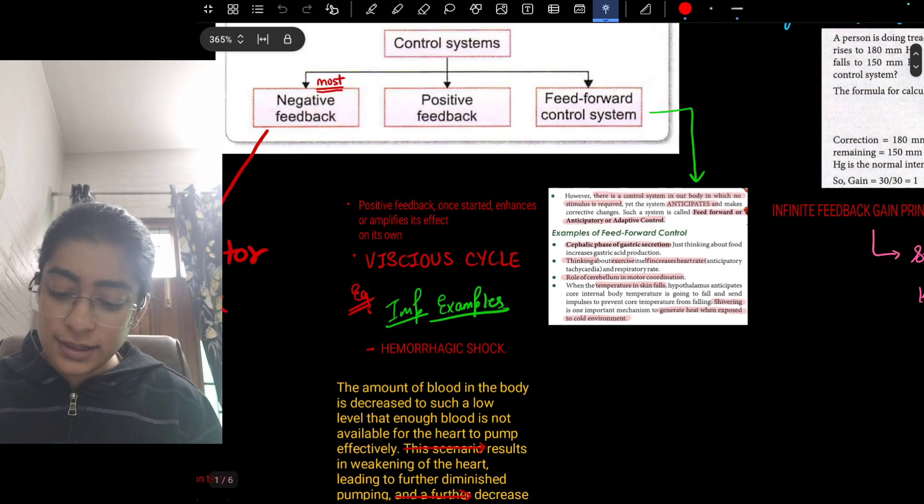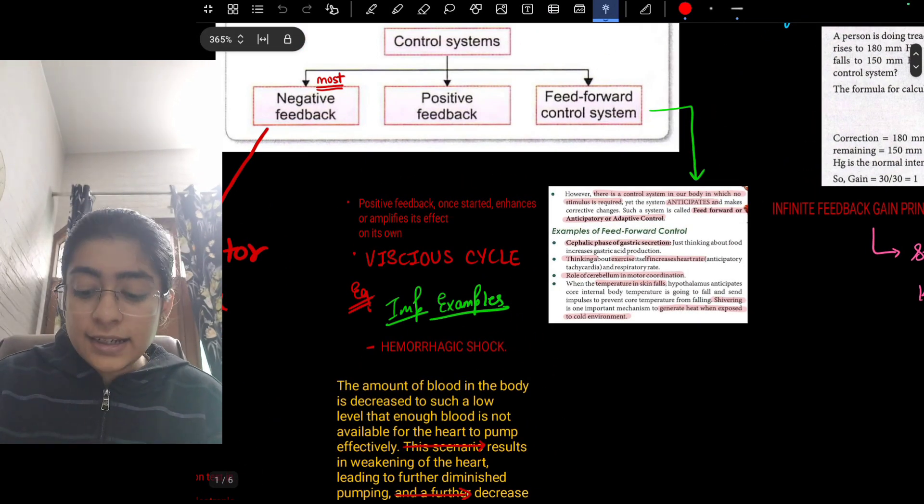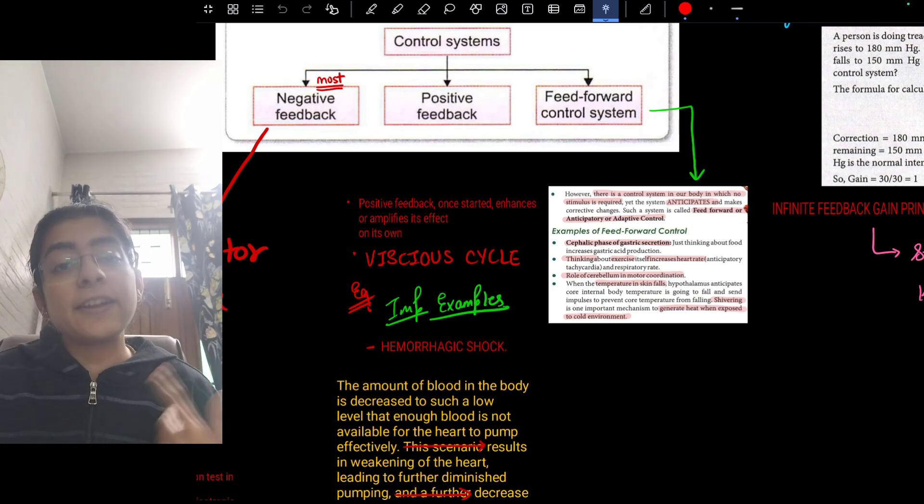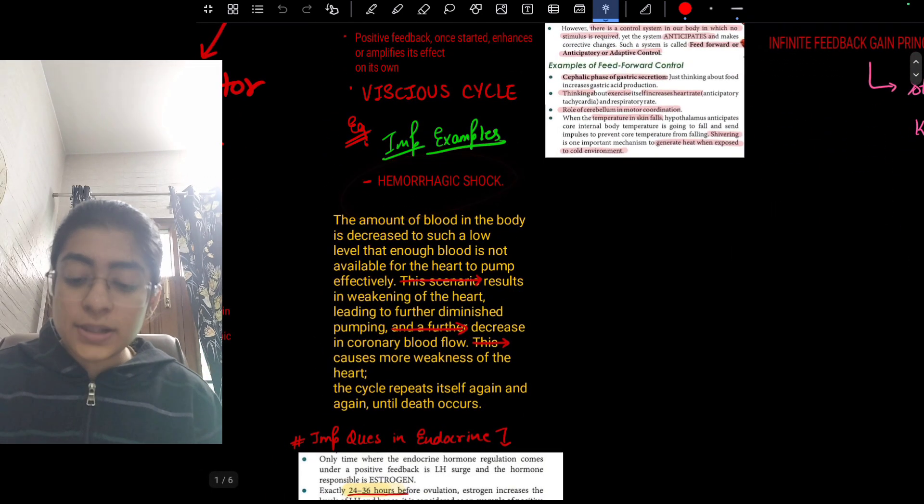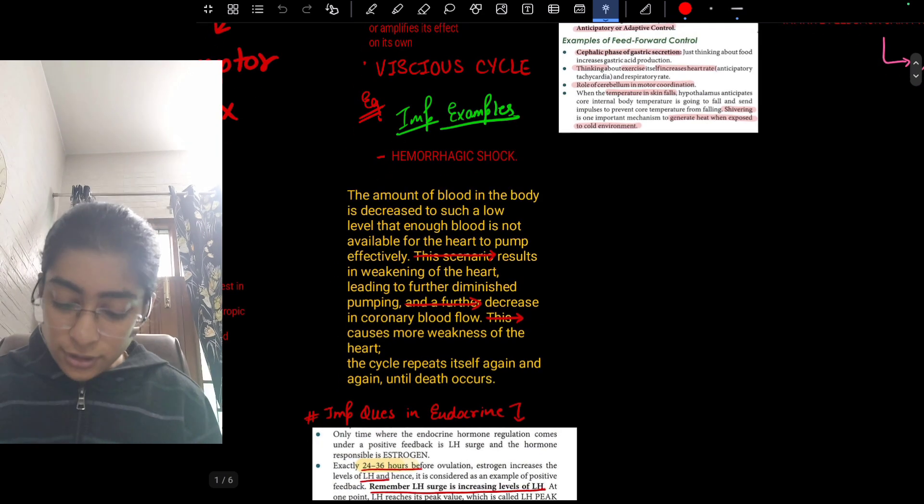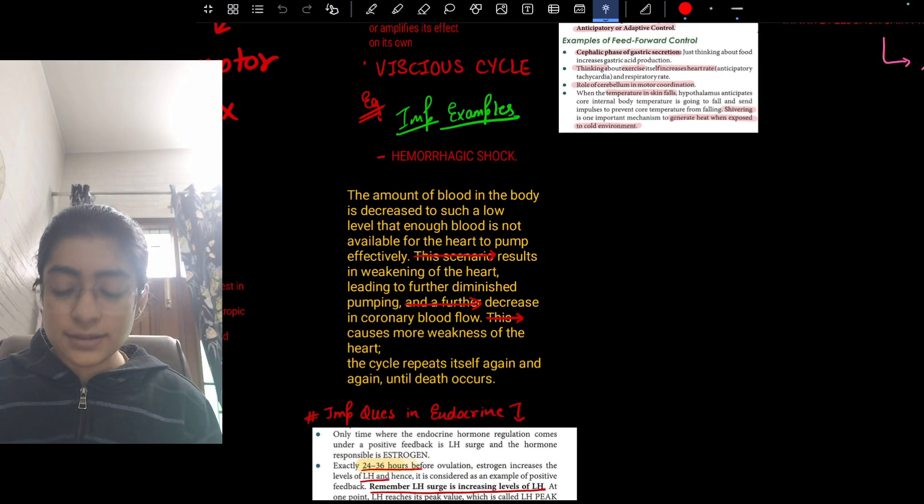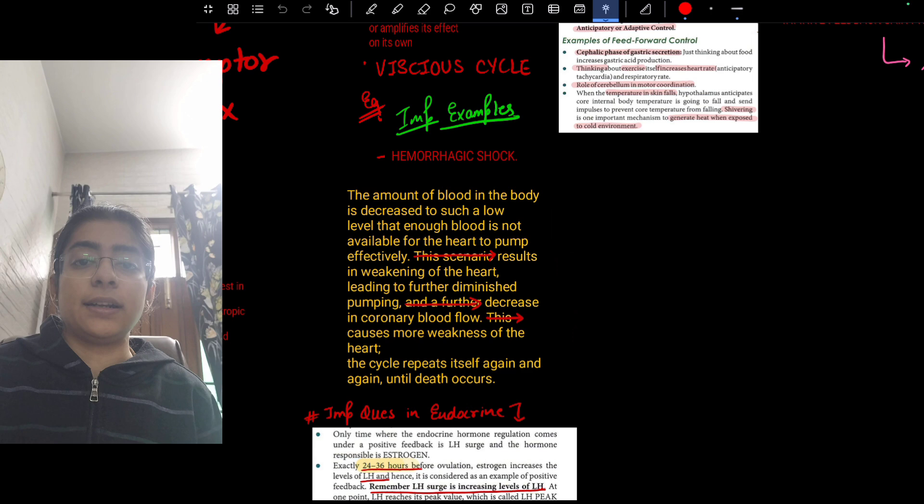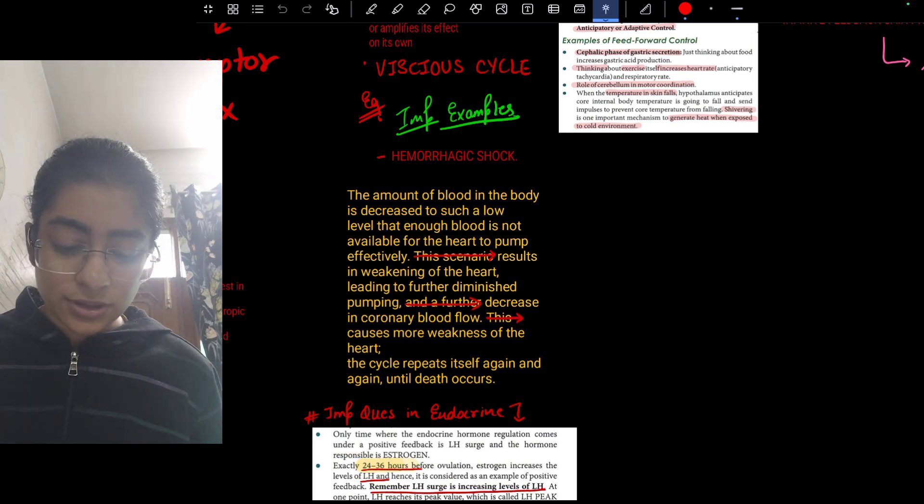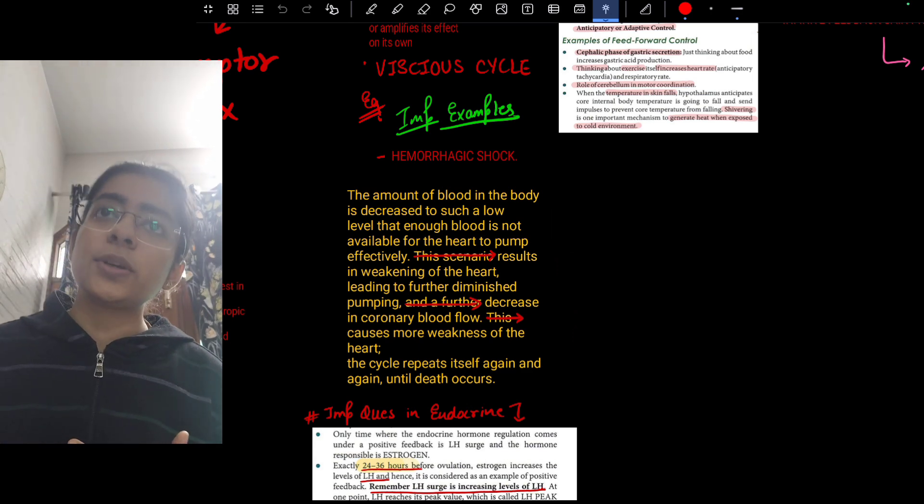In positive feedback, once started it enhances or amplifies the effect of its own. So it is a vicious cycle. The classic example is hemorrhagic shock. I have drawn these arrows that means you need to write it in flowchart. This is the way how we convert a paragraph into a flowchart.